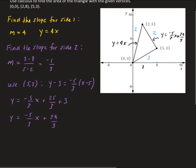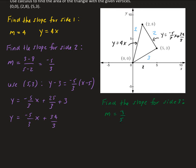Now we find the slope for side 3. That side goes through the origin and (5,3), so the slope is simply 3 fifths. Since it goes through the origin, the equation is y equals 3 fifths x.